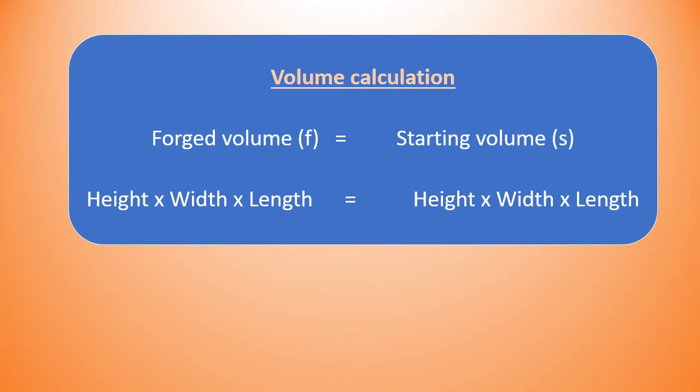You know that the amount of metal you start with is the amount of metal you end with. It has just been forged to a different shape. Therefore, you can use the volume formula by setting the end volume or the forged volume equal to the parent stock or starting volume.